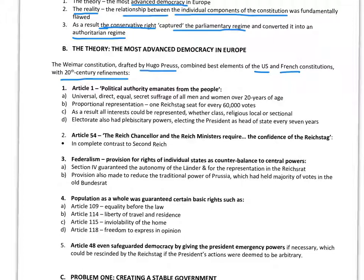Article 1 — and it is important in the examination that you show precise knowledge. The very first article states, and it's worthwhile learning this quote: 'political authority emanates from the people.' It was a parliamentary regime with universal, direct, equal, and secret suffrage — voting rights for all men and women aged 21 and over.